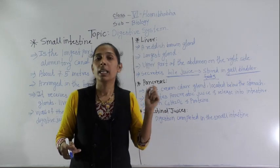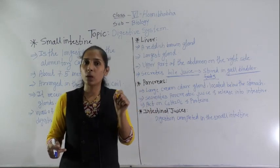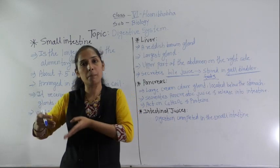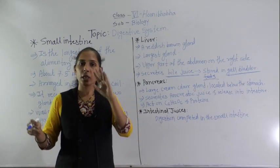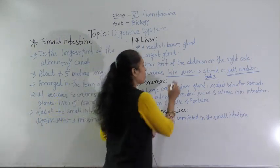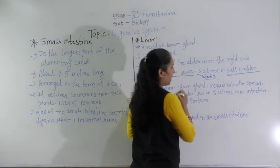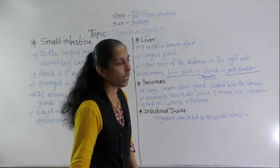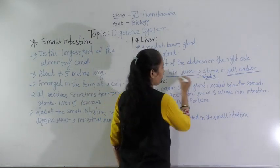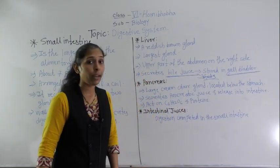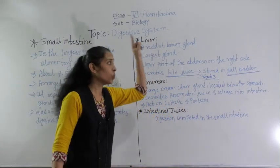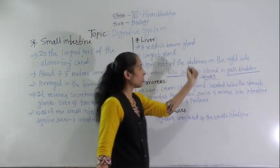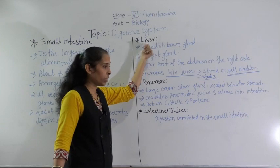How does bile juice help digest fats? The fats in food are present as droplets and are very difficult to digest. The bile juice breaks down these fat droplets and converts them into a simpler form. In summary: bile juice helps digest fats, it is secreted by the liver, and stored in the gallbladder.